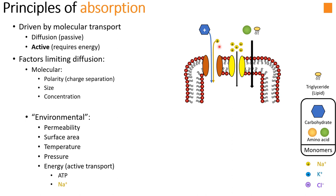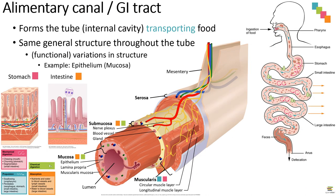Now that we've reviewed those principles of absorption, we can investigate how the structure of the GI tract is adapted around the limitations and requirements for absorption, and how it's specialized to overcome different barriers — whether size or chemical properties like polarity — in order to get things from inside the lumen of the GI tract into the actual cells and blood vessels lining the GI tract.